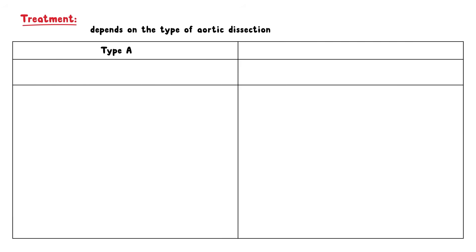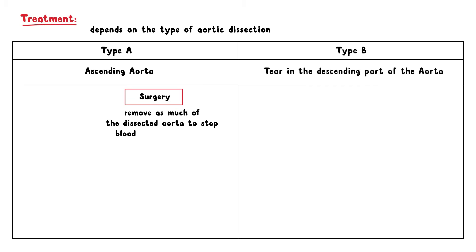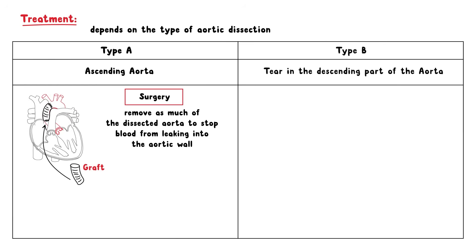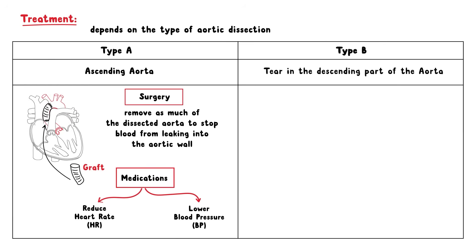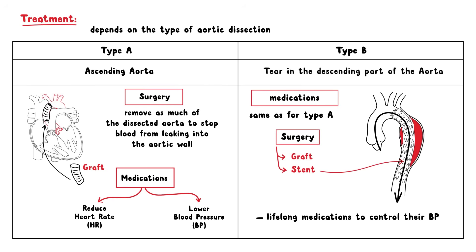Treatment for aortic dissection depends on the type. Type A develops in the ascending aorta, whereas Type B involves a tear in the descending part of the aorta and may extend to the abdomen. Type A aortic dissection involves surgery, where the surgeon removes as much of the dissected aorta as possible to stop blood from leaking into the aortic wall, and a graft is used to reconstruct the aorta. Medications are also used to reduce heart rate and lower blood pressure to prevent worsening of the dissection. Type B is managed similarly, but mainly with medication.